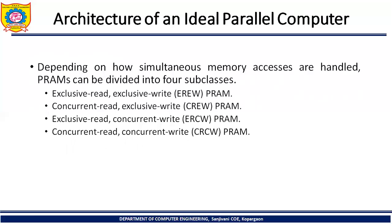The four subclasses are EREW, CREW, ERCW, and CRCW. Which of these subclasses is the most efficient and powerful for a parallel computer? EREW means you can read and write exclusively. CREW means concurrent read but exclusive write. But the last one, CRCW — Concurrent Read and Concurrent Write — is no doubt the best suitable subclass for the Parallel Random Access Machine.